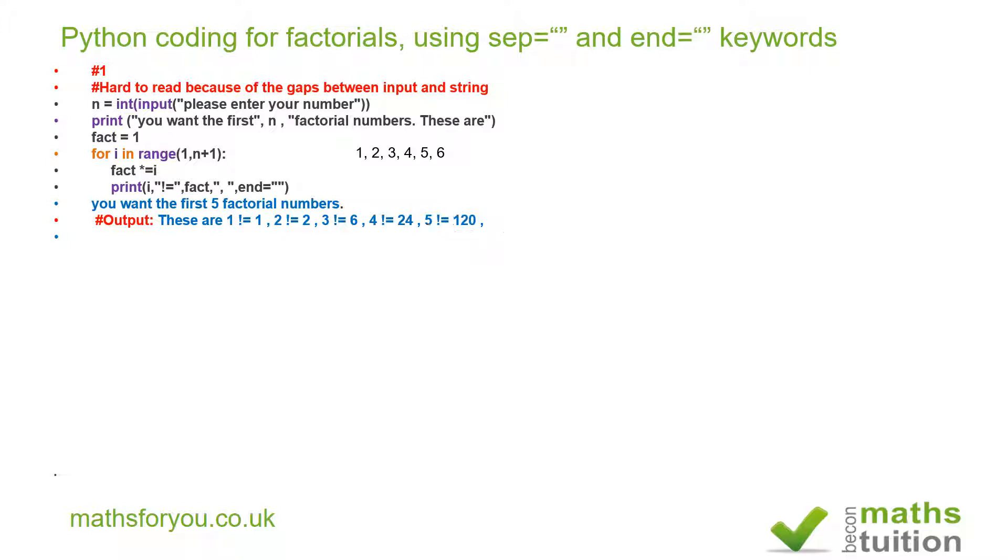By the way, this 'end' keyword here ensures that our output is all in one line. If that weren't there, you're going to have one factorial in one line, two in a second line, then third line, fourth line, and fifth line. So you could have five lines. With having 'end' there, we have the output all in one line.